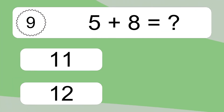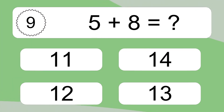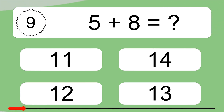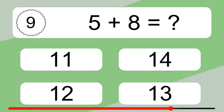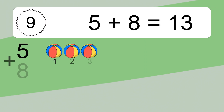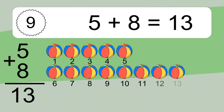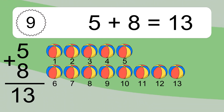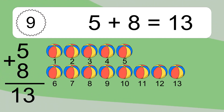5 plus 8 equals what? 5 plus 8 equals 13. Let's count it: 1, 2, 3, 4, 5, 6, 7, 8, 9, 10, 11, 12, 13.